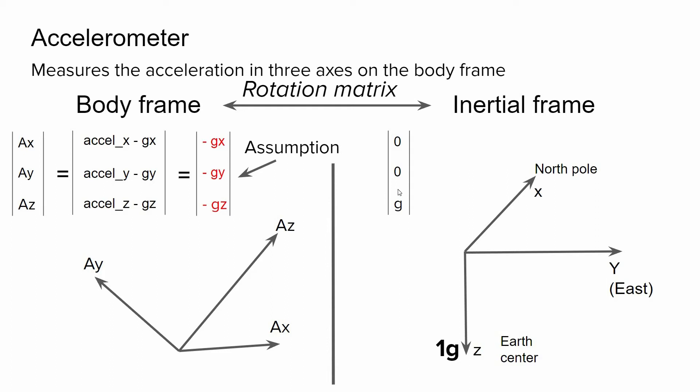On the inertial frame, we can denote the gravity in the following way: 0, 0, g vector, because the gravity is aligned with the z-axis of the inertial frame.